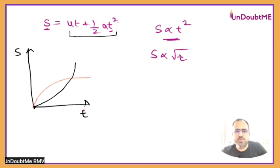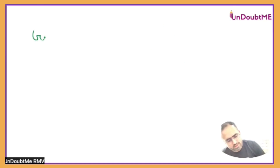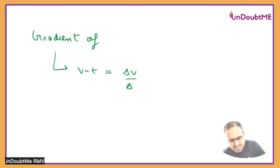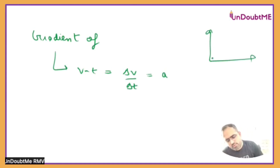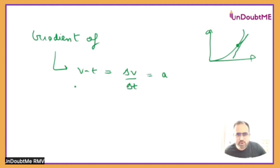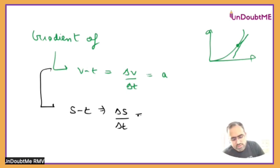If we have the S versus T graph, they can ask for the gradient at any point. The gradient of a velocity-time graph — which is change in V over change in time — gives acceleration. If it is a V-T graph, the gradient gives acceleration, whether it is uniform or non-uniform. There can be a V-T graph given as a curve, and they can ask us for the gradient at a point; we draw the tangent and find rise over run. If it is a displacement-versus-time graph, the gradient gives displacement upon time, which is velocity.